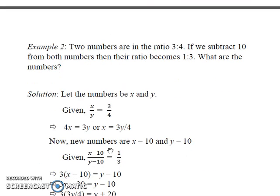Now let's look at the second example. Two numbers are given in the ratio 3 is to 4. If we subtract 10 from both numbers then their ratio becomes 1 is to 3. Find the numbers. So this is a question involving two variables.